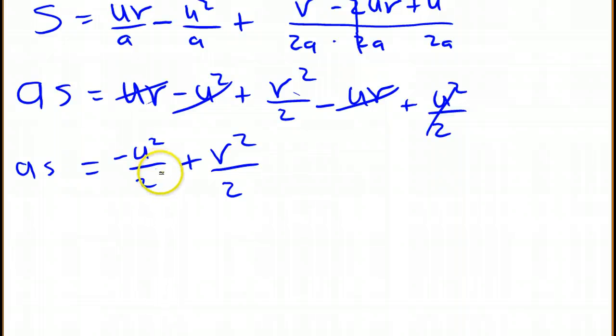So we're going to add u squared over 2 to both sides. Actually first, let's take care of the 2. We're going to multiply both sides by 2.